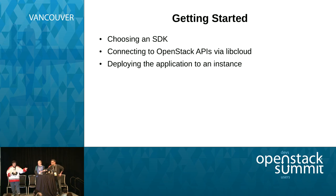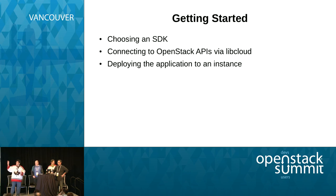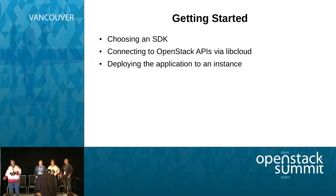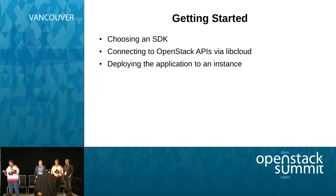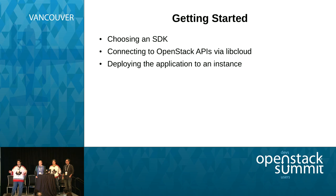Getting started — the first thing we're going to do is decide what SDK we're going to use. In this particular example, we used LibCloud. LibCloud is just a cloud API SDK basically. It doesn't matter which one you use — the concepts are all the same. We just had to pick one for this example, and this one was the most complete when we were writing this book.